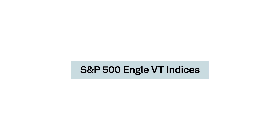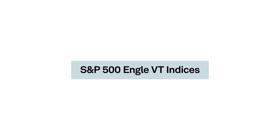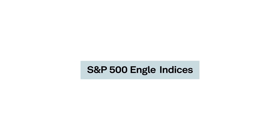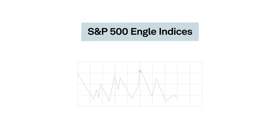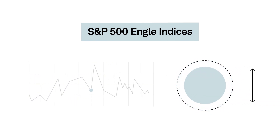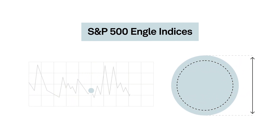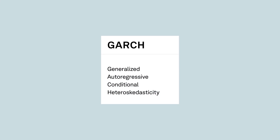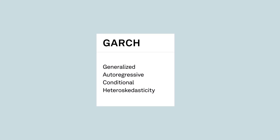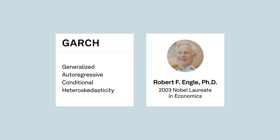The S&P 500 Engel VT indices, or S&P 500 Engel indices for short, measure dynamic exposure to the S&P 500, applying a predictive volatility control mechanism that employs a variation of the GARCH model, inspired by the research of Nobel laureate Robert F. Engel.